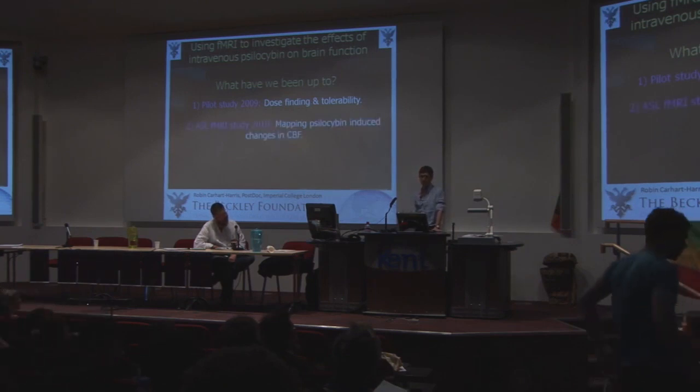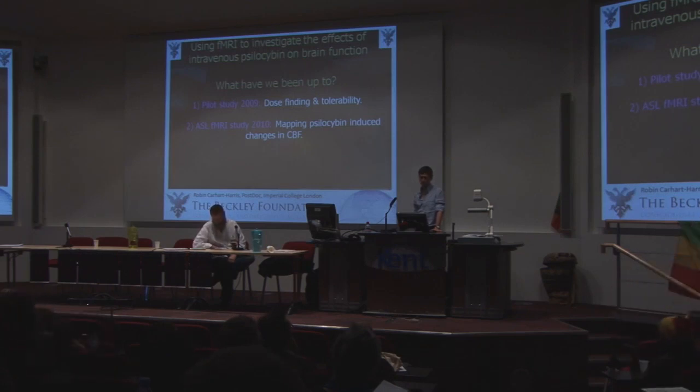That exercise in 2009 gave us some confidence the drug was well tolerated and allowed us to go into the scanning situation with some reassurance. In 2010 we completed our first fMRI study using ASL — arterial spin labelling — which is perfusion fMRI, measuring changes in blood flow in the brain. There's a relatively reliable coupling between changes in blood flow and neural activity, so we can draw relatively reliable inferences about neural activity from the ASL signal.